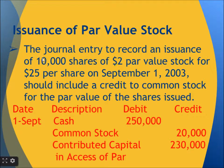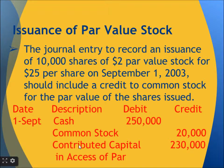What we need to write in common stock is par value multiplied by number of shares. Since par value is $2, we multiply $2 by 10,000 shares, which gives us $20,000 in common stock on the credit side. Then we deduct: $250,000 minus $20,000 gives us the contributed capital in excess of par. This is calculated as total cash received minus common stock, where common stock is at par value and cash is based on the selling price per share.